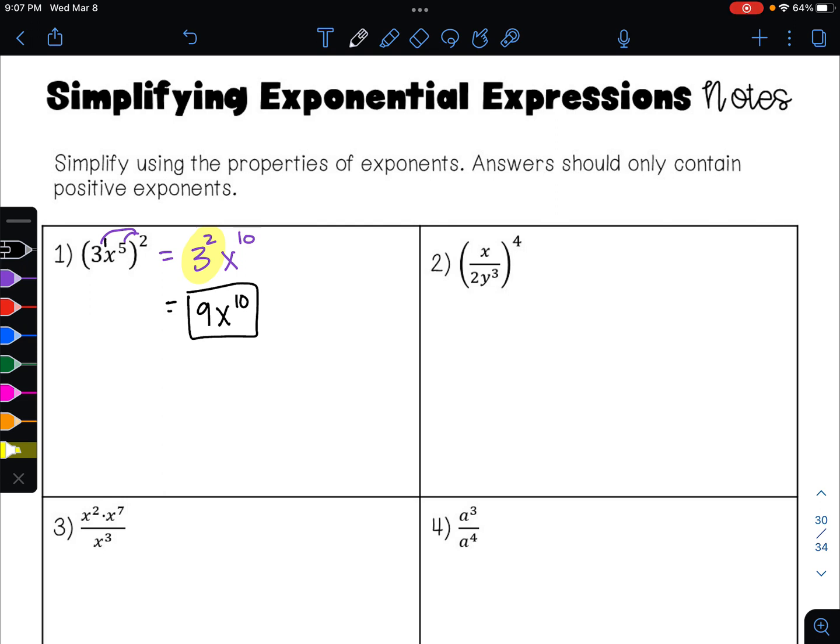On example 2, we have a couple different things going on. The first thing is I have a quotient raised to a power. And so I need to distribute that power to everything in there. So this x has an invisible exponent of 1. This 2 has an invisible exponent of 1. So when I distribute, 1 times 4 is 4.